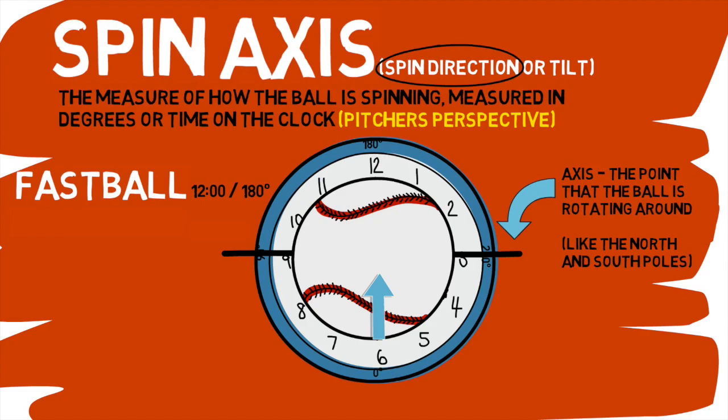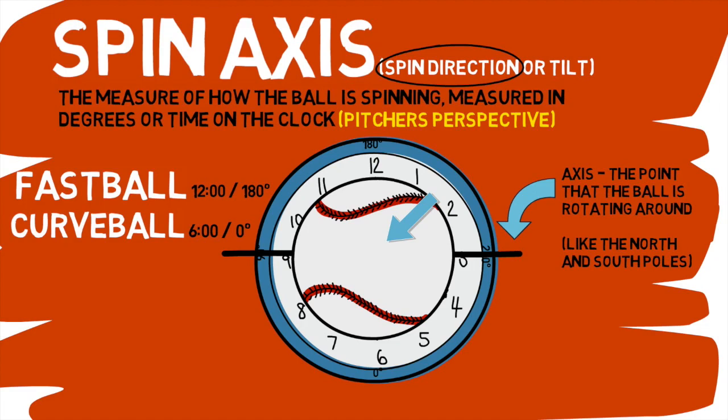Now if we flip the direction the pitch is spinning and throw a pitch with pure topspin, this would read as a perfect 12-6 curveball with a 6 o'clock spin axis and zero degrees of tilt. An important last thing to note about spin axis is when you see a reading with any minutes, that's simply saying that it is between two hour marks. So 1:30 is just the halfway point between a 1 o'clock spin axis and a 2 o'clock spin axis.